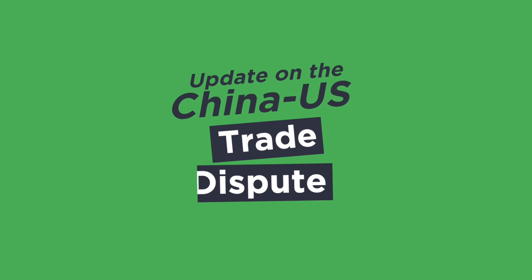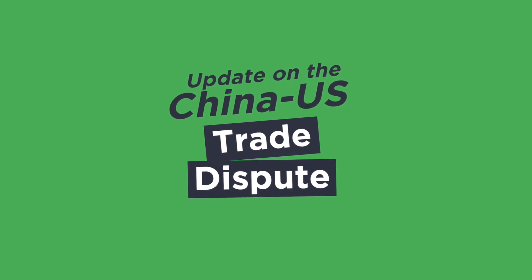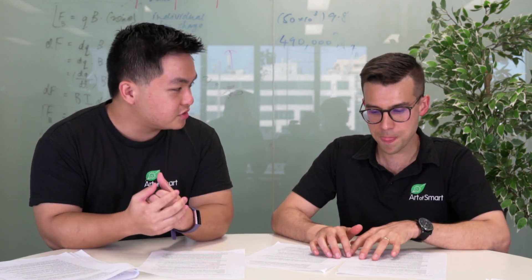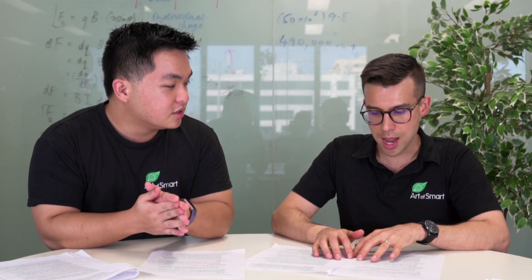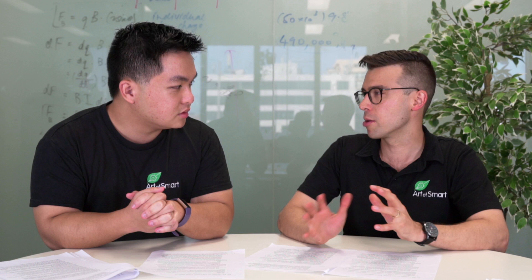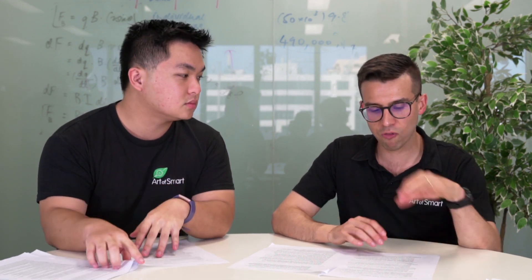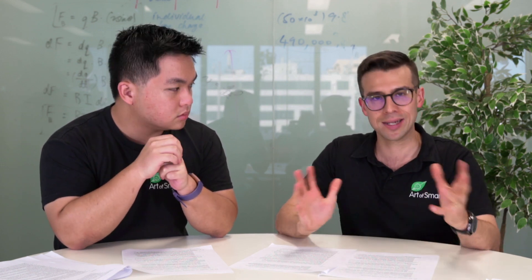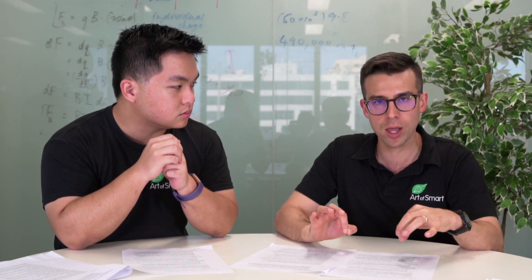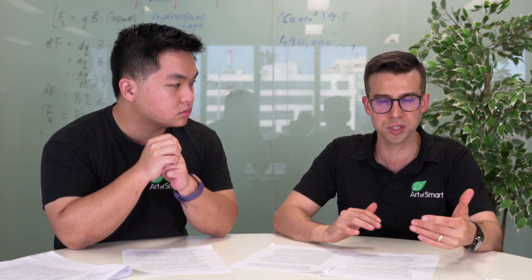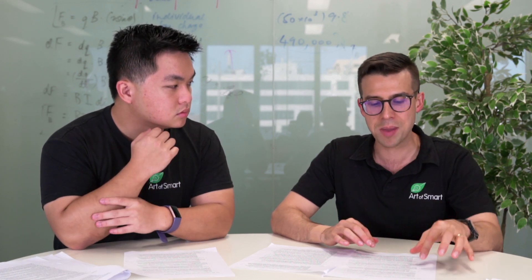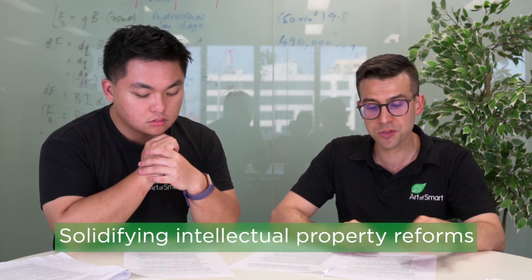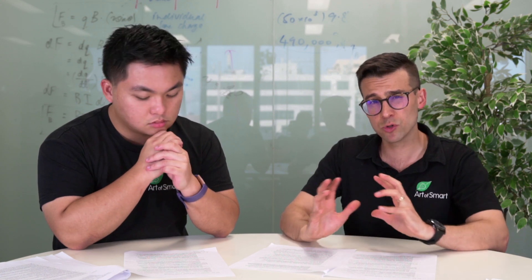We're going to dive into that today, but we're also just going to look at how that impacts Australia, because we do need to focus on Australia's relationship with the rest of the world and the global economy. There's a lot that's gone on and a lot that's not in this agreement. If we try to simplify it, there are really four major components — well, six major things we're going to highlight. The big first thing is solidifying reforms around intellectual property.